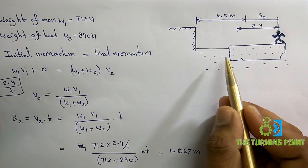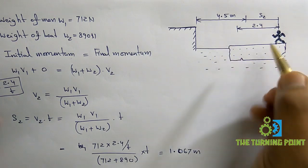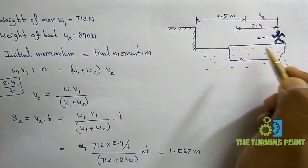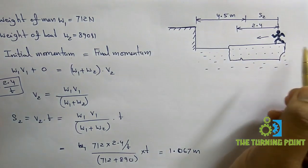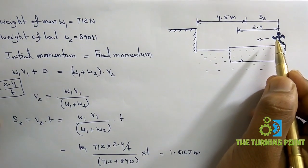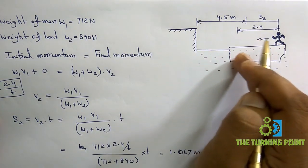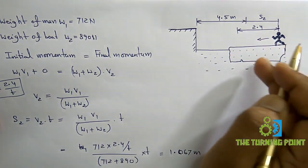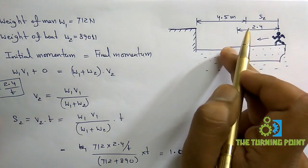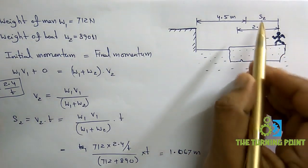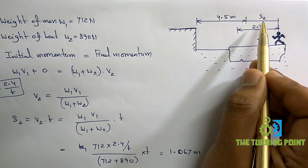Note that the man is moving towards the pier, and the boat moves in the opposite direction. When the man walks in one direction using his feet, he creates motion for the boat in the opposite direction. So the boat moves away from the pier, and we have calculated that distance s2 as 1.067 meters.